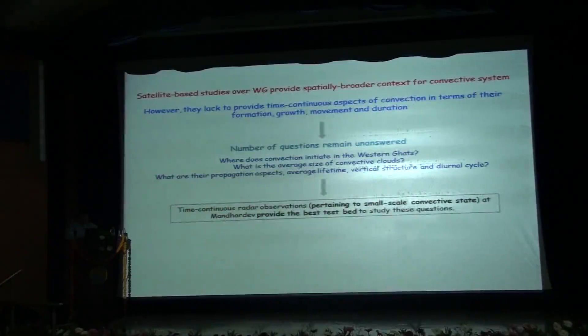Although satellite-based studies over the western ghats provide a spatially broader context for convective systems, they lack to provide time-continuous aspect of convection in terms of their formation, growth, movement and duration. Thus a number of questions remain unanswered. For example, where does convection initiate over the western ghats? What is their average size? What are their propagation aspects in terms of average lifetime, their vertical structure, their diurnal cycle, etc.? The time-continuous radar observations pertaining to the small scale convective state of the atmosphere at Mahabaleshwar should provide the best test bed to study these questions.